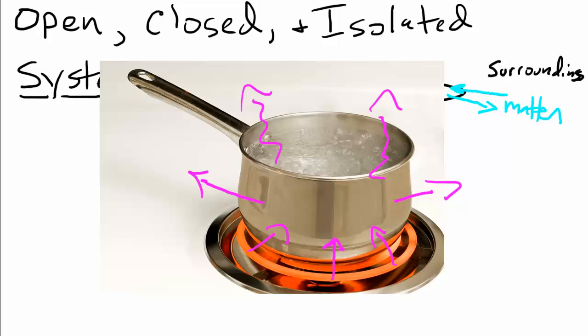And at the same time, there's no matter going into the system, but as the liquid water down here turns into gas, then we have matter leaving the system as well. So we have energy going into and coming out of the system and we have matter coming out of the system. This would be a great example of an open system.